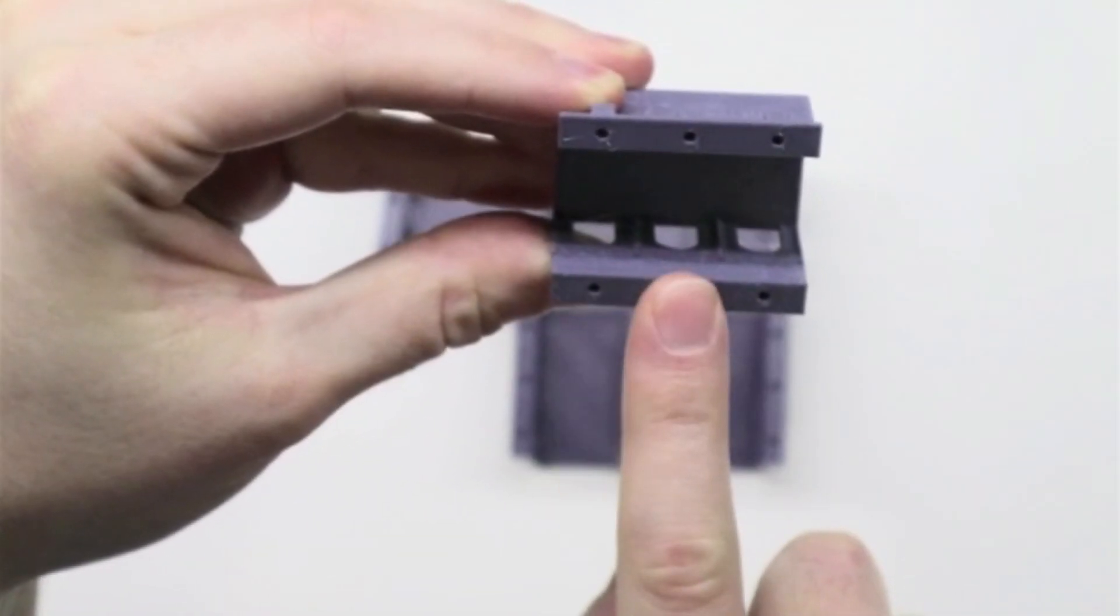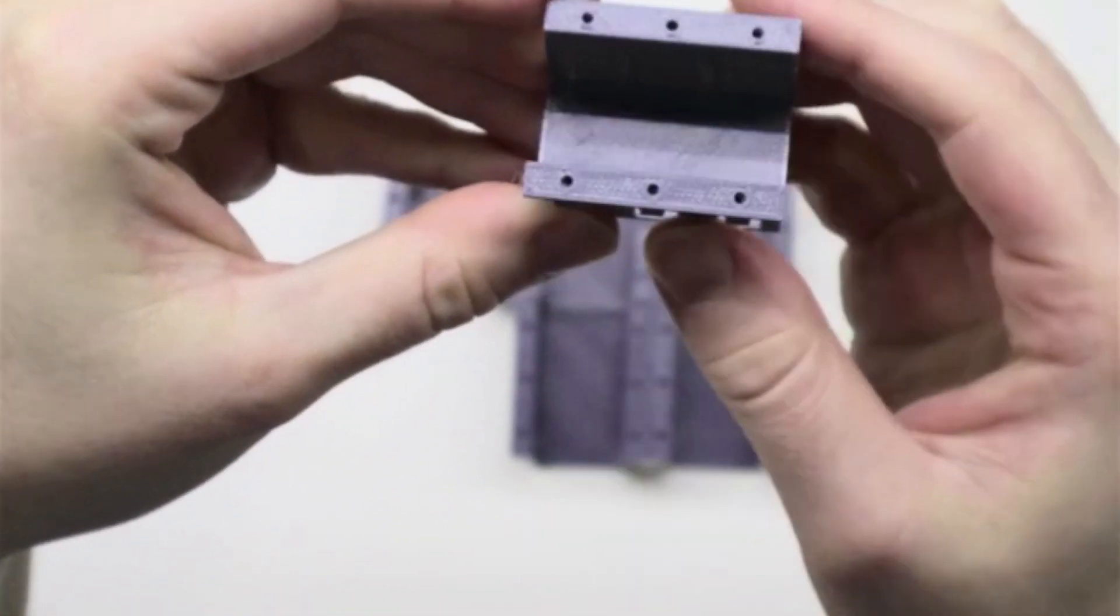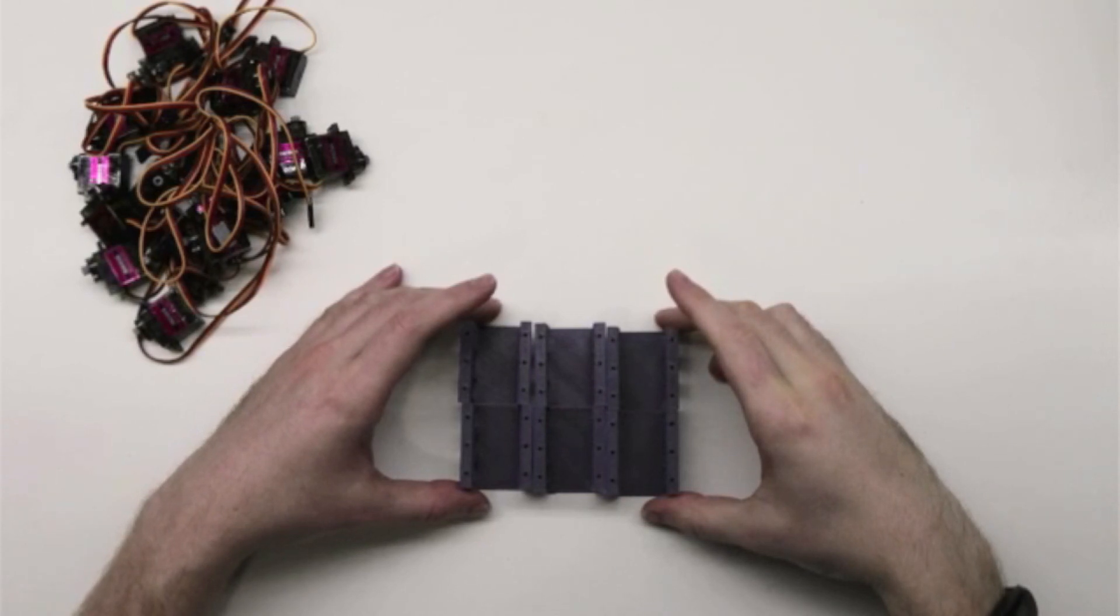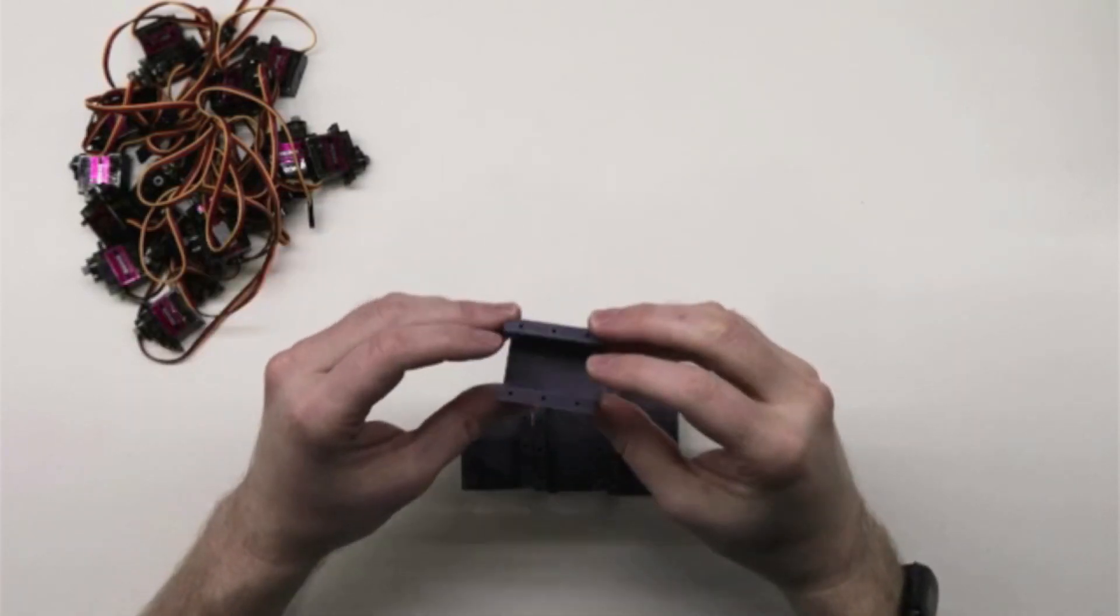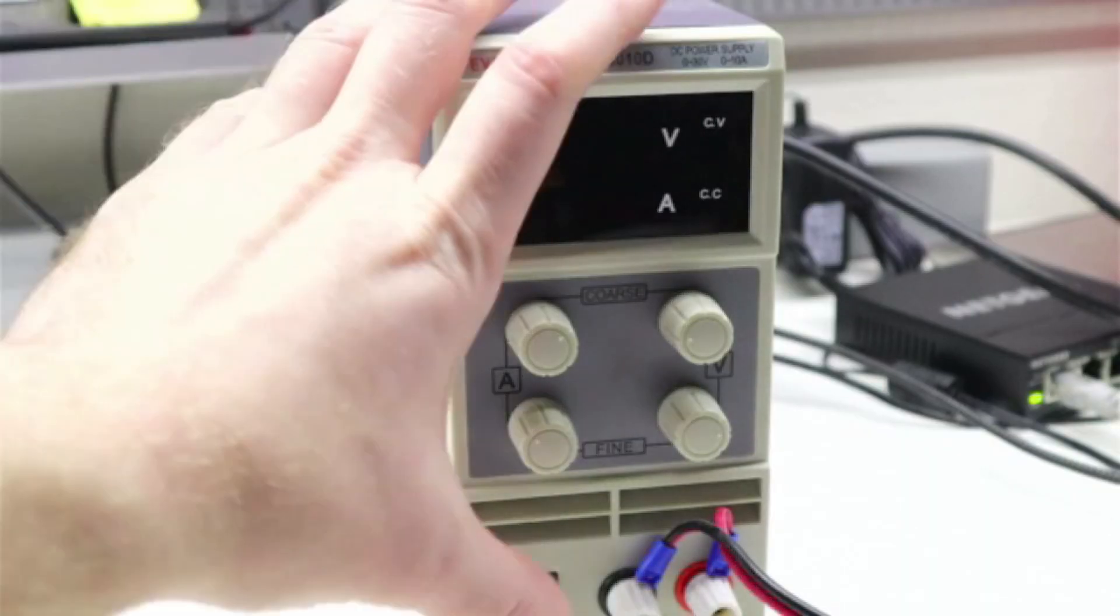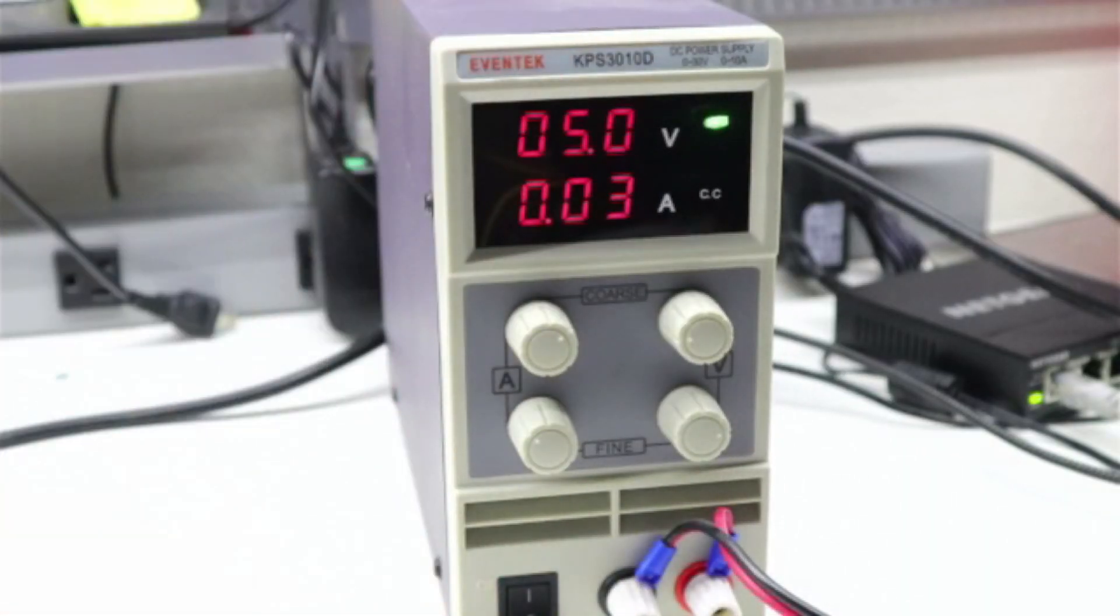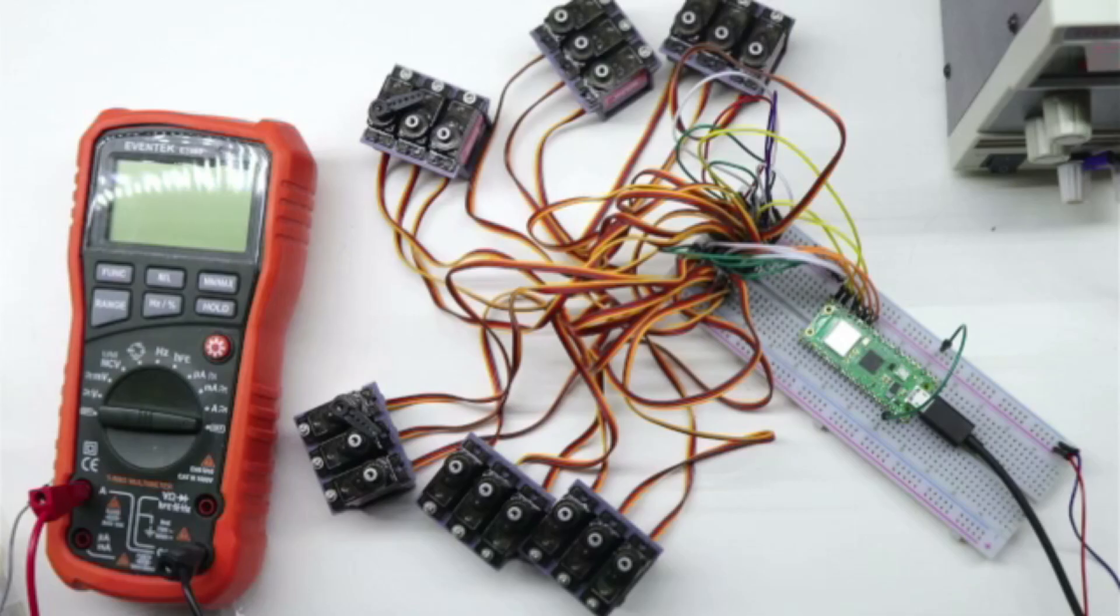I printed off 6 of them so I only have to maintain 6 brackets instead of 18 servos. To start the testing, I will be using my desktop power supply with it set to 5 volts. I plugged all 18 servos into a breadboard with the Pico.